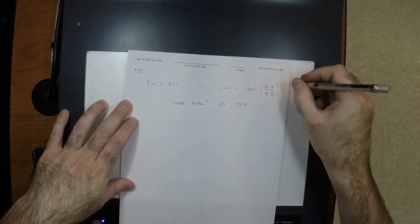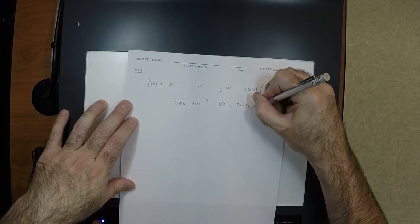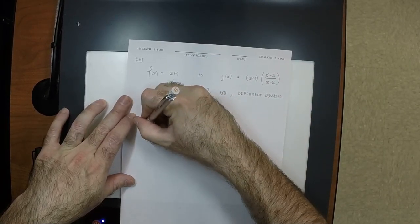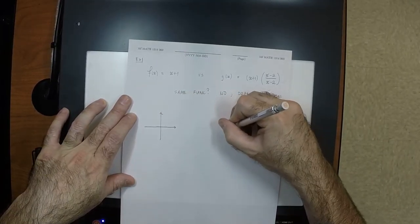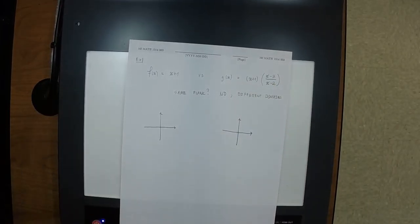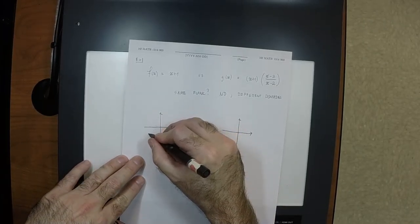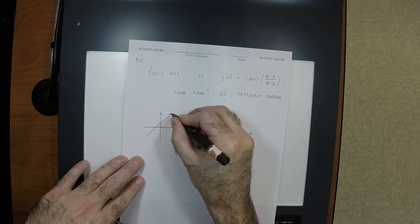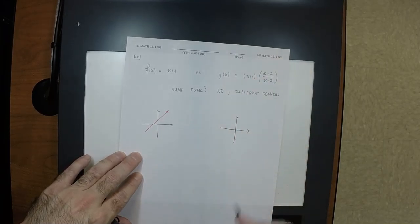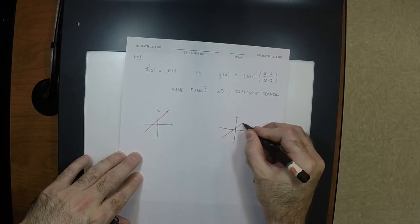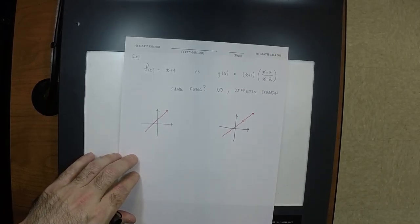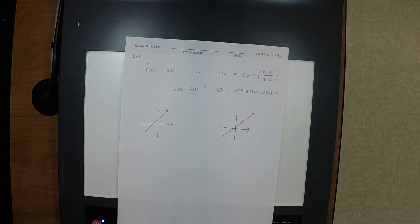If you were to plot f, it's just a line with slope 1 and y-intercept 1. If you were to plot g, it would look just the same except at x equals 2 there would be a hole. We're going to see more effects of this on Wednesday. Have a nice Monday.